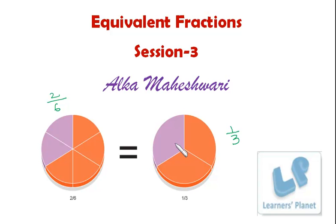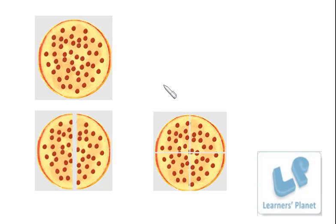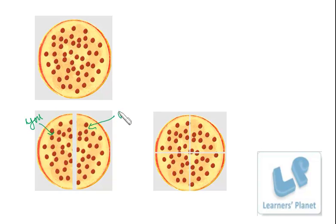So in this session we'll learn about equivalent fractions. You have one whole pizza. Your mama has made a very tasty pizza for you. Your friend Amit is coming, so you cut the pizza into two equal portions — this portion is yours and this portion is Amit's. So this is one by two and this is also one by two — half of the pizza you will eat, half of the pizza Amit will eat.